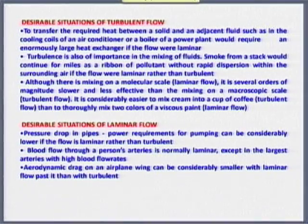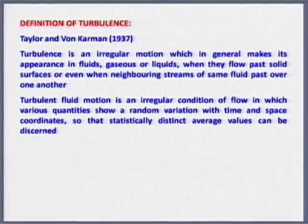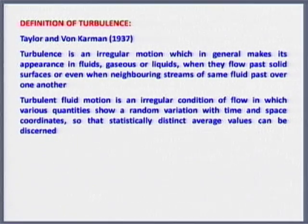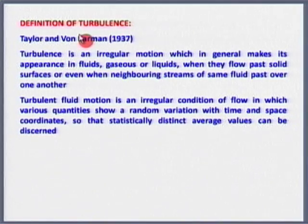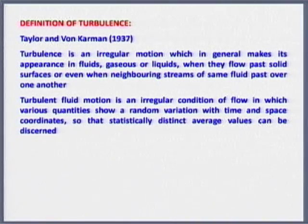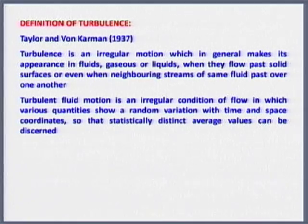These are typical things we say when talking to somebody about turbulence. Now, what is turbulence - is there a definition? According to Taylor and Von Kármán: turbulence is an irregular motion which in general makes its appearance in fluids, gases or liquids, when they flow past solid surfaces, or even when neighboring streams of the same fluid flow past one another.